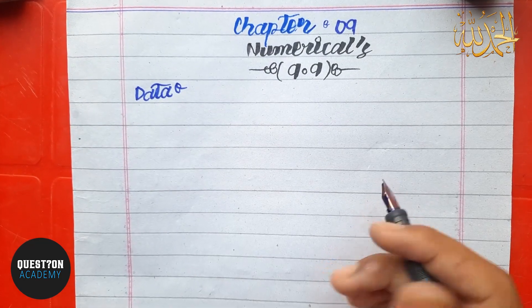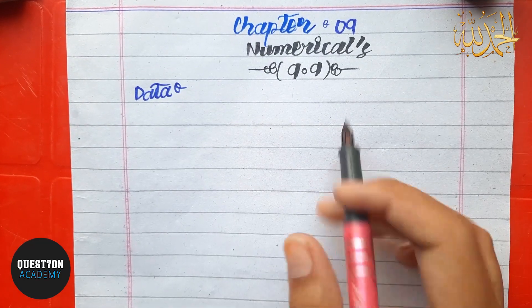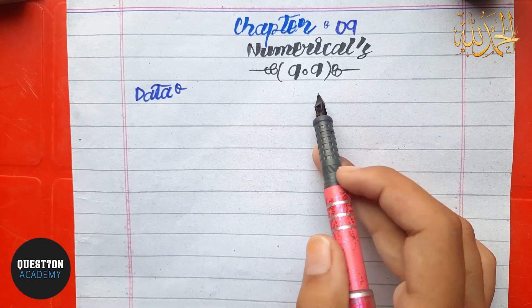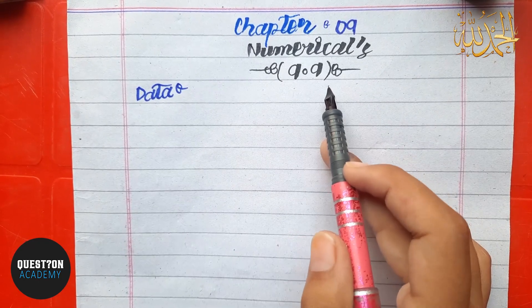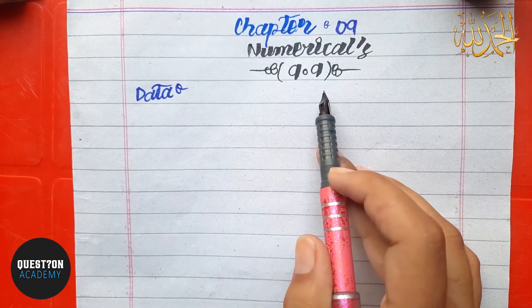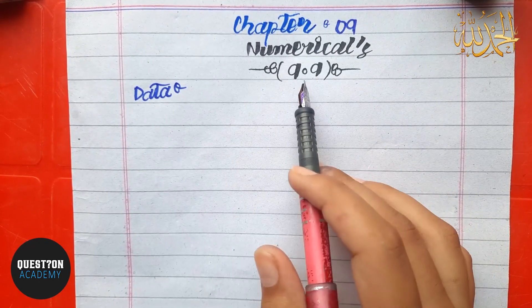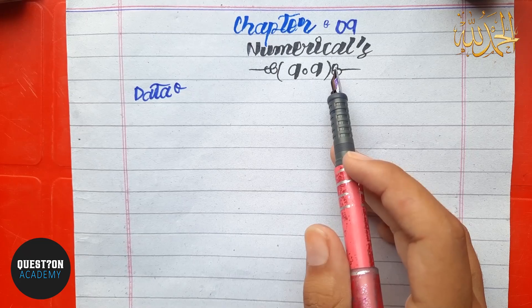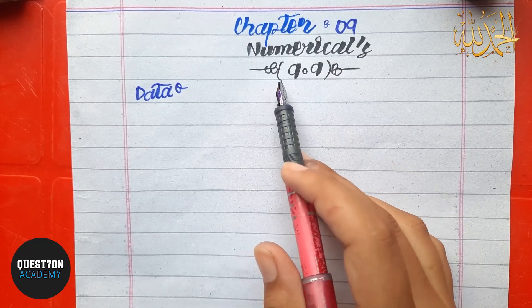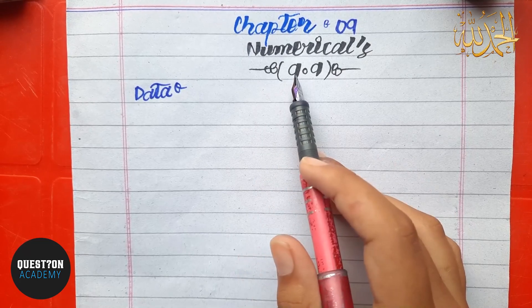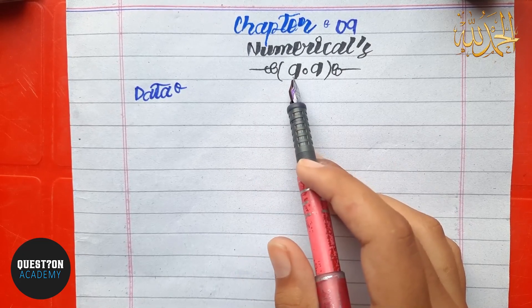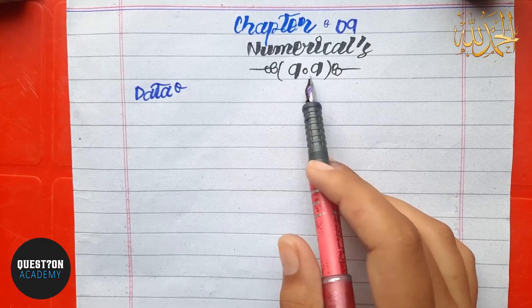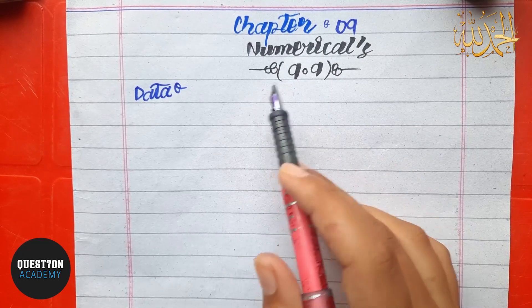Assalamualaikum friends. Today we are going to do chapter number 9, numerical number 9.9. It is a very important numerical and also it is very easy, because the way we have done the previous numericals — the formula and the method — we will solve it in the same way, and we will solve it very easily.